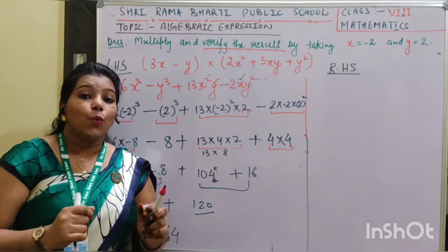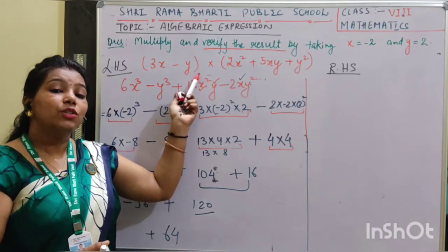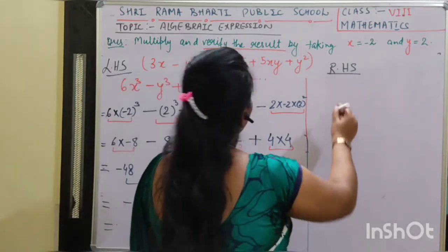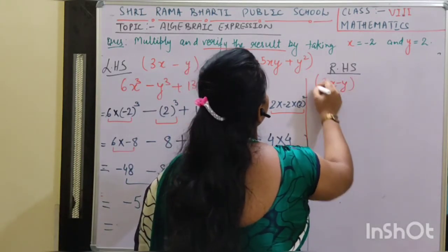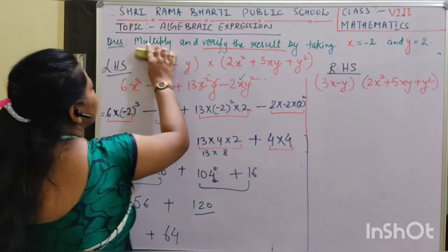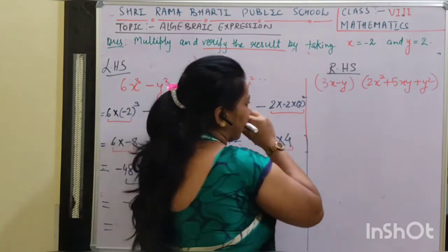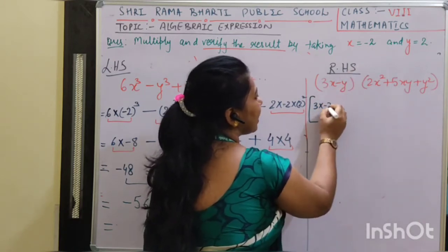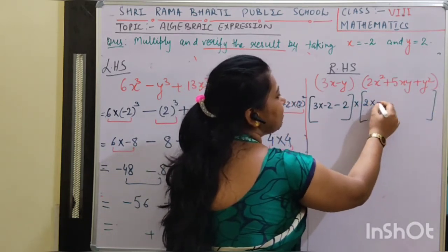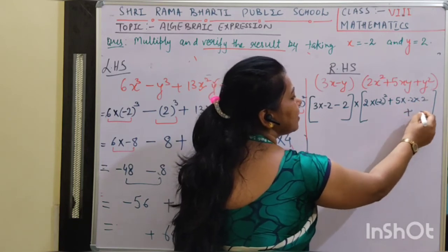Now we have to see whether if we put the values of the variables directly into the original question, we get the same answer or not. So let's do that. In the RHS part: (3x minus y) times (2x squared plus 5xy plus y squared). This is my question. Now I am going to put the values of all variables into this, where x equals minus 2 and y equals 2.